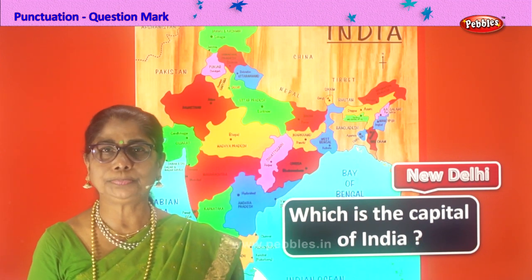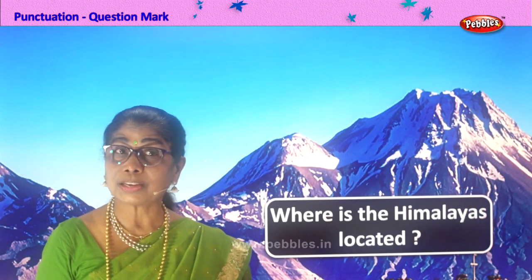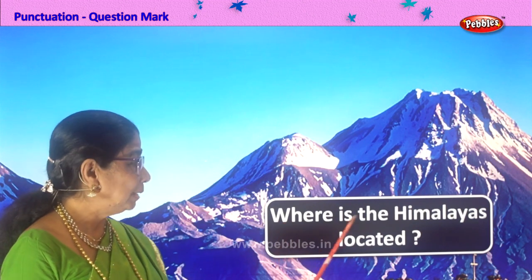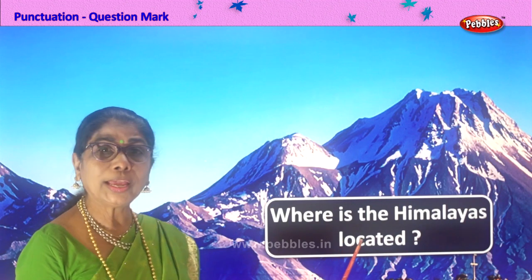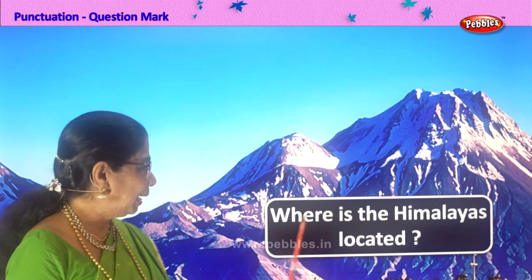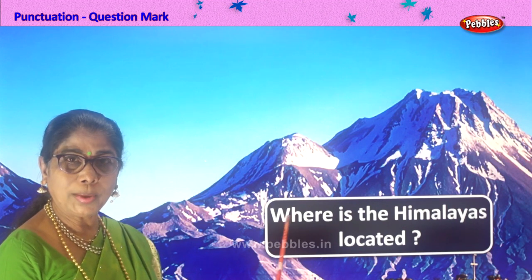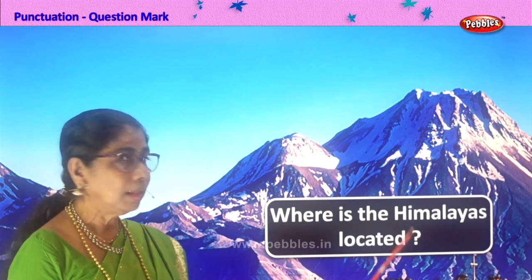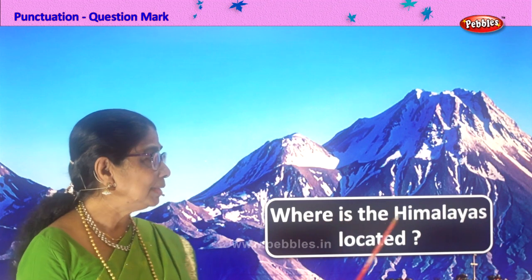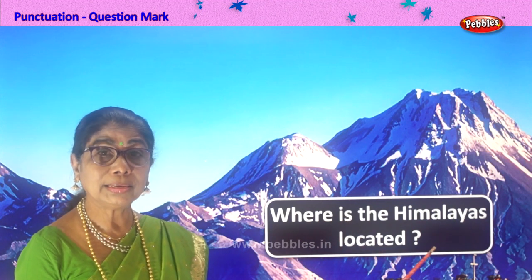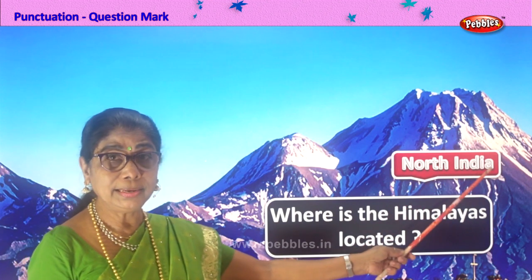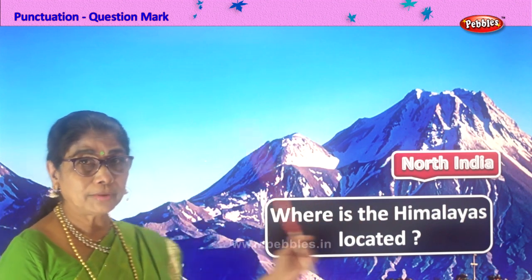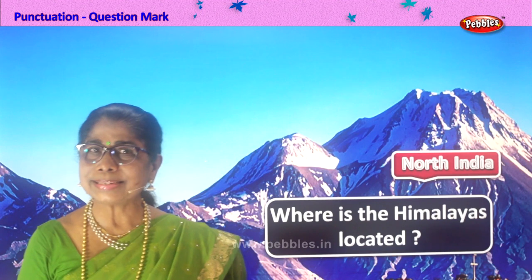Good. Let's take a new picture. Read the sentence — it's a sentence asking a question. Let's place a question mark at the end. Where is the Himalayas located? The sentence begins with a capital letter, first letter is capital — 'Where.' It's asking a question, so we put the punctuation question mark at the end. Where is the Himalayas located? Himalayas is located in North India. Look at the lovely picture of Himalayas.